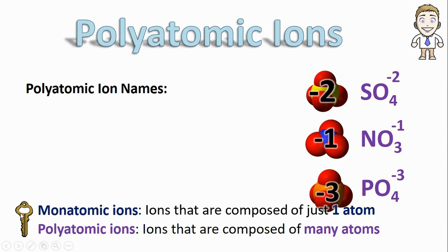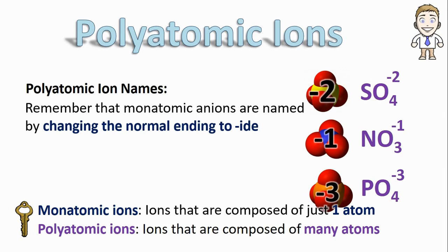Now let's talk about what to call these big polyatomic ions, starting by remembering how monatomic ions are named by changing the normal ending to ide. For example, if you had a sulfur with a minus two, you wouldn't call it sulfur. You drop the ending and change it to ide, making this a sulfide ion.